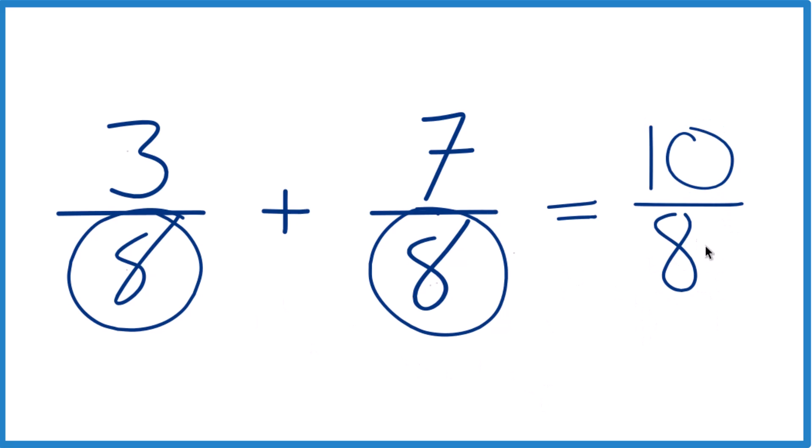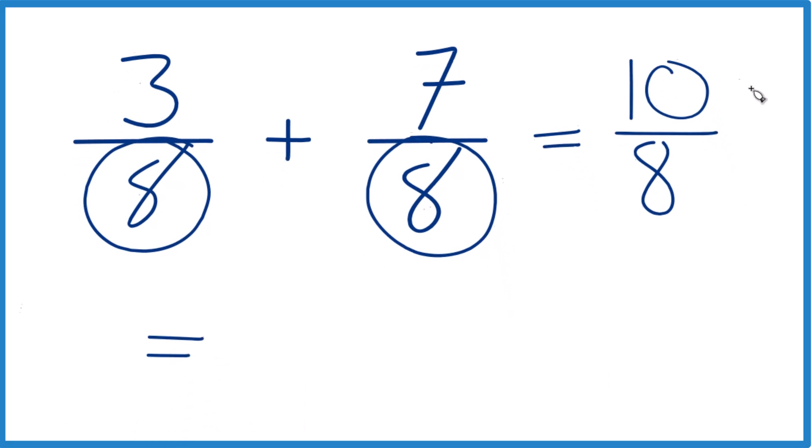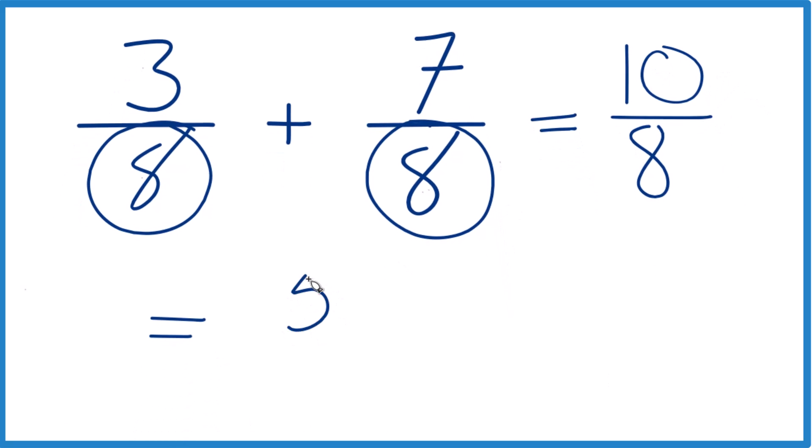We can simplify this further too, because 10 and 8, those are even numbers. So let's do this. Let's take 10 divided by 2, that gives us 5, and then 8 divided by 2, that gives us 4.